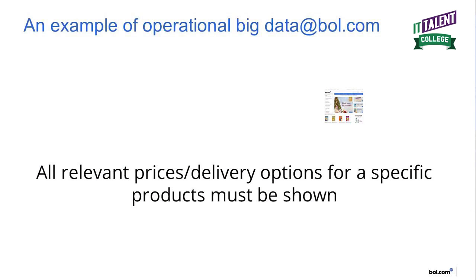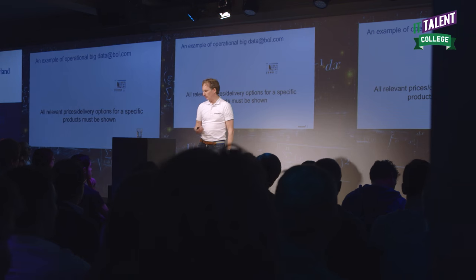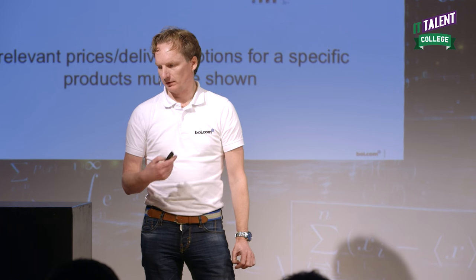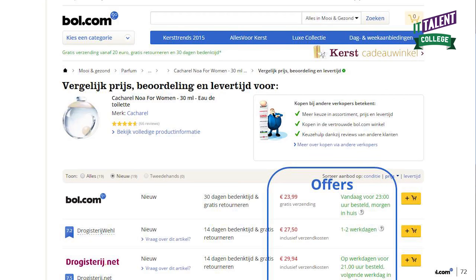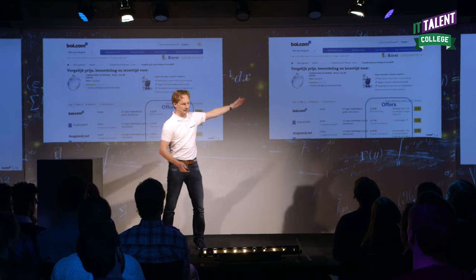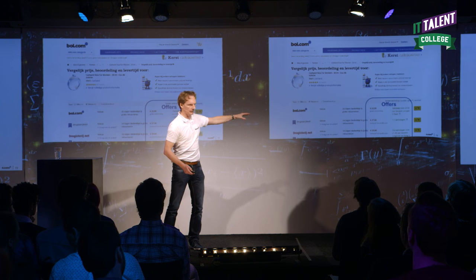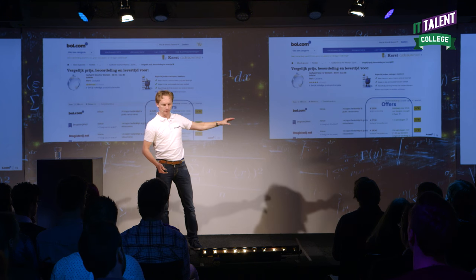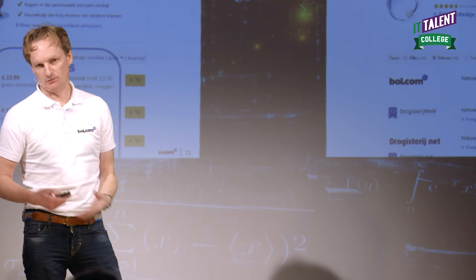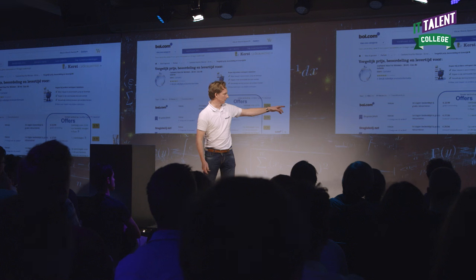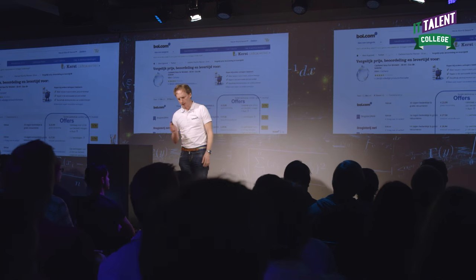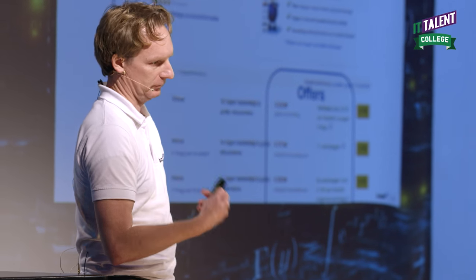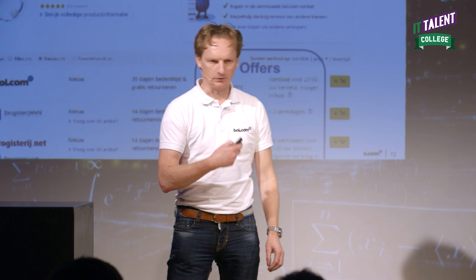Operational big data. The use case is that we want to show all relevant pricing and delivery options for a specific product. If you look at this picture, it's perfume — it's Christmas time, so many people are buying perfume. You can actually see that we have multiple offers available. We can buy this product delivered by Bol.com, but we also have partners like Drogisterij Whale or Drogisterij.net, who can also have that product available at a specific price under their own conditions.